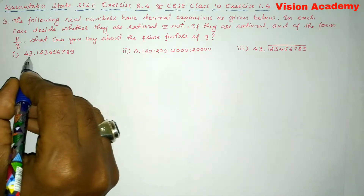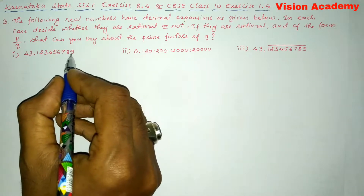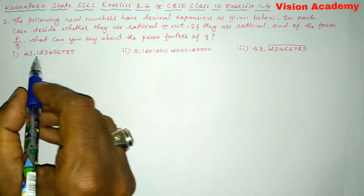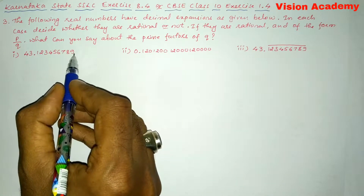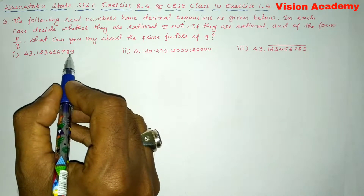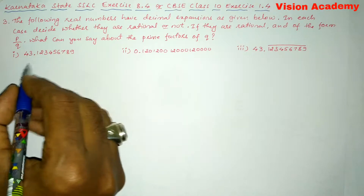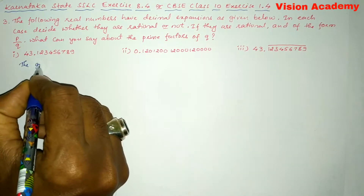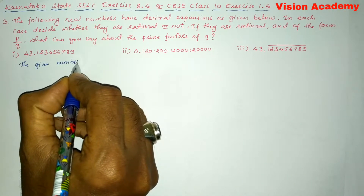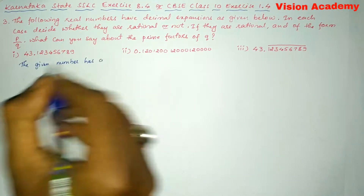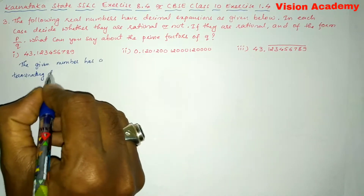Let us take the first one: 43.123456789. Here you can easily identify that this decimal expansion is terminating because it stops at 9. It has already stopped at 9, so therefore we can write the given number as a terminating decimal expansion.